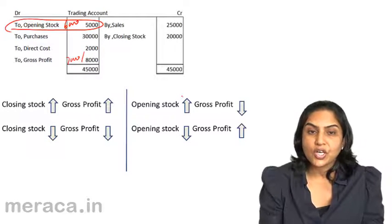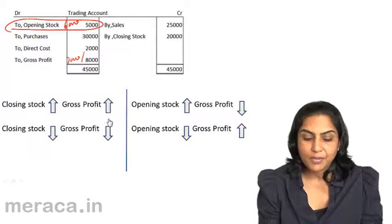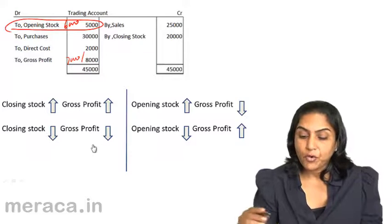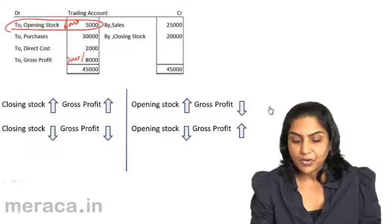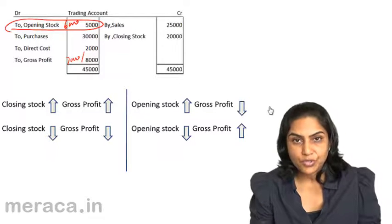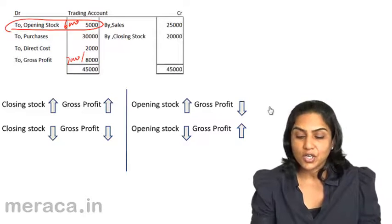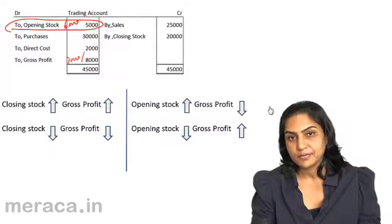Closing stock goes up, gross profit goes up. Closing stock comes down, gross profit comes down. If opening stock were to go up, gross profit would come down. Whereas if opening stock were to be reduced, it would result in increased gross profit. Thank you.